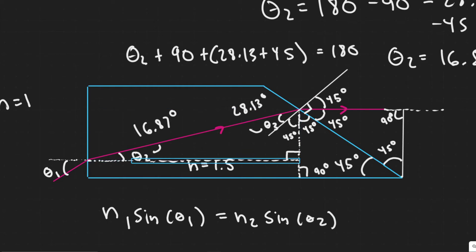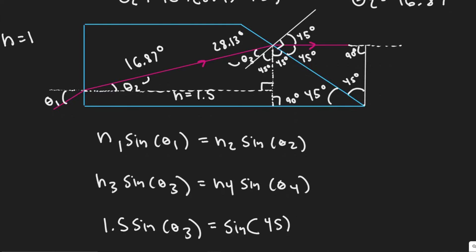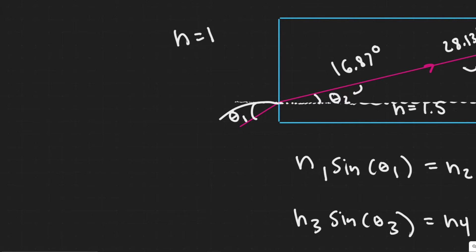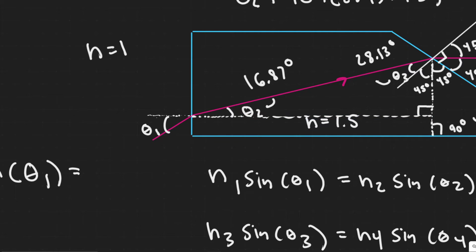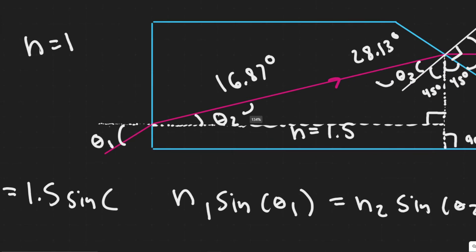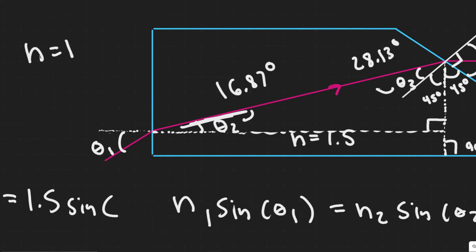Now with theta 2 we can use Snell's law at the left face to solve for theta 1. We're starting on the outside and entering the glass. So n1 is 1 (air) times the sine of theta 1 equals n2, which is 1.5, times the sine of theta 2. Theta 1 is the angle between the beam and the normal perpendicular to the left face. Theta 2 is the angle between the beam inside the glass and that same normal, which is 16.87 degrees.